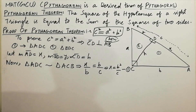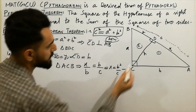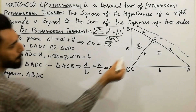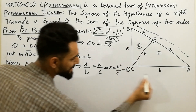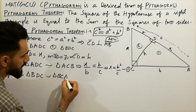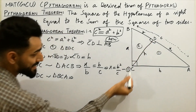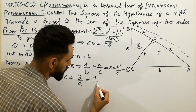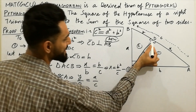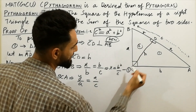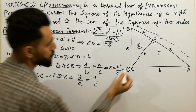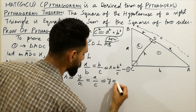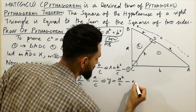Now again, taking triangle BDC: triangle BDC is approximately similar to triangle BCA. Just like before, from this similarity we get the ratio y divided by a equals a divided by c. So we get y = a² / c. This is the second equation. I hope the concept is clear.